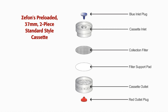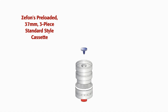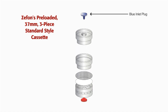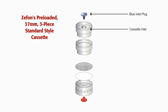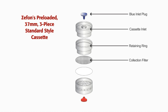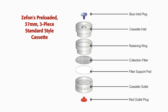Zefon's preloaded 25mm three-piece asbestos style cassettes are configured with a blue inlet plug, a cassette inlet, a retaining ring, a collection filter, a filter support pad, the outlet cassette, and finally a red outlet plug.